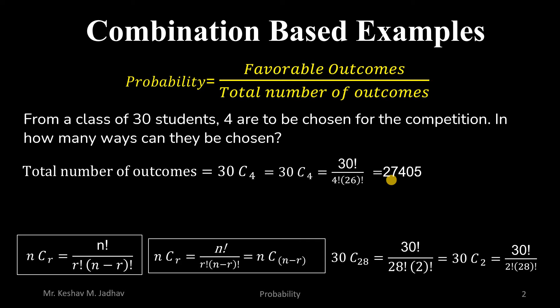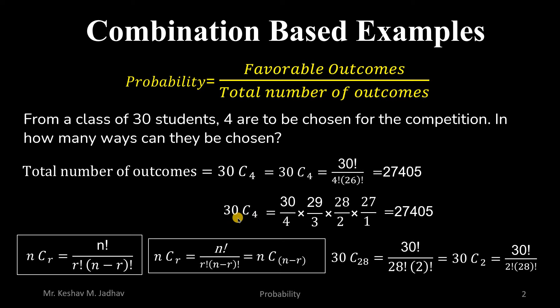If you have a scientific calculator you can directly calculate the NCR value. Otherwise, here is a simple way: to calculate 30C4, in the numerator start from 30 and reduce the value 4 times by 1 — so write 30 × 29 × 28 × 27 — and in the denominator start from r down to 1, so write 4 × 3 × 2 × 1. Calculating this gives the same value of 27,405.